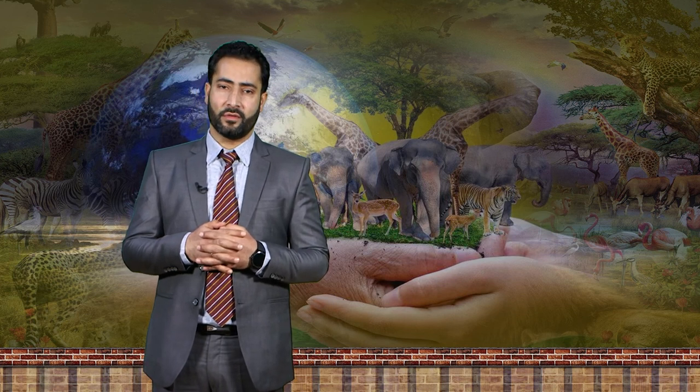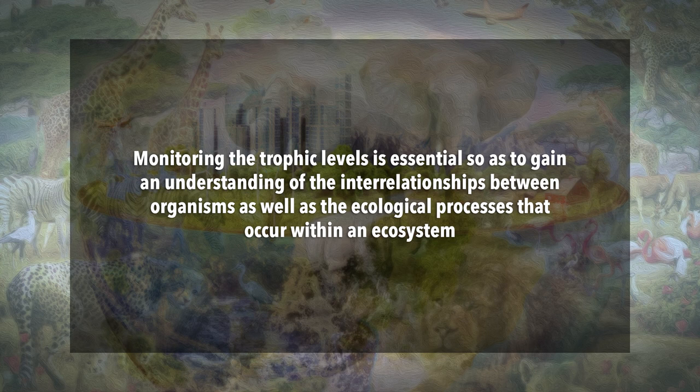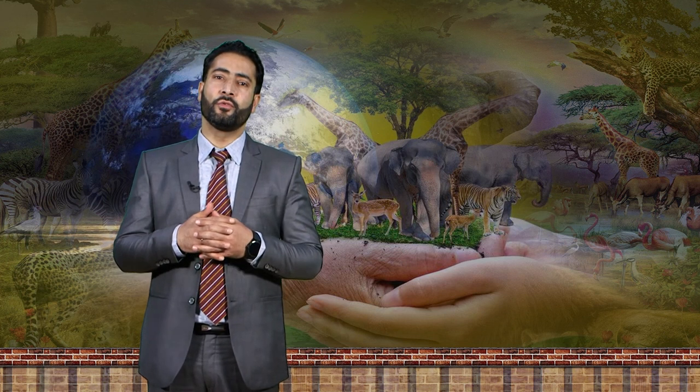The distribution of biomass in an ecosystem implicates ecosystem stability. In the case of an inverted pyramid, the ecosystem could fail when there are more consumers than primary producers. Now, the significance of the trophic level: monitoring the trophic levels is essential to gain an understanding of the interrelationships between organisms as well as the ecological processes that occur within an ecosystem. In that way, the magnitude of herbivory, predation, and decomposition processes could be used to know the status and stability of an ecosystem.